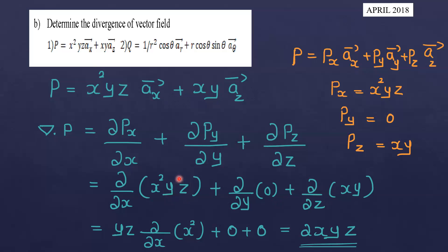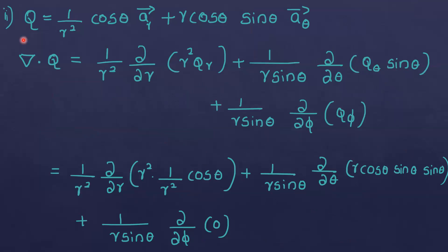Differentiating: treating y and z as constants, dou by dou x of x squared gives 2x, multiplied by yz gives 2xyz. The derivative of 0 is 0. The derivative of xy with respect to z is also 0, since x and y are constant. So the final answer is 2xyz.